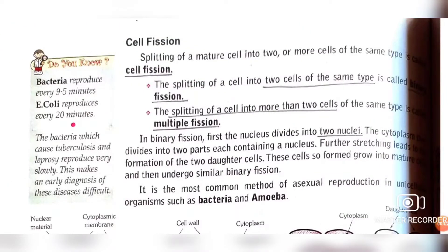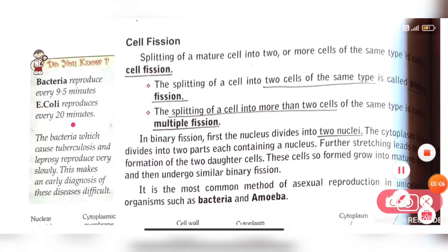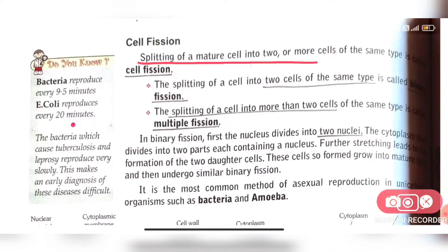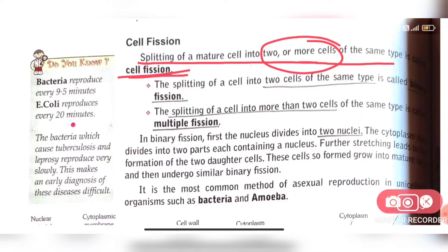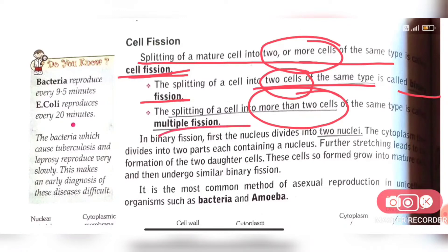Our first method of asexual reproduction is cell fission. The splitting of a mature cell into two or more cells of the same type is called cell fission. When a cell splits into exactly two cells of the same type, that is binary fission. When a cell splits into more than two cells at the same time, that is called multiple fission.